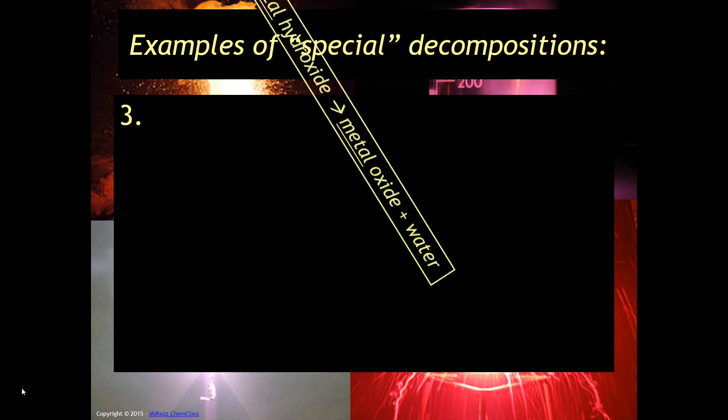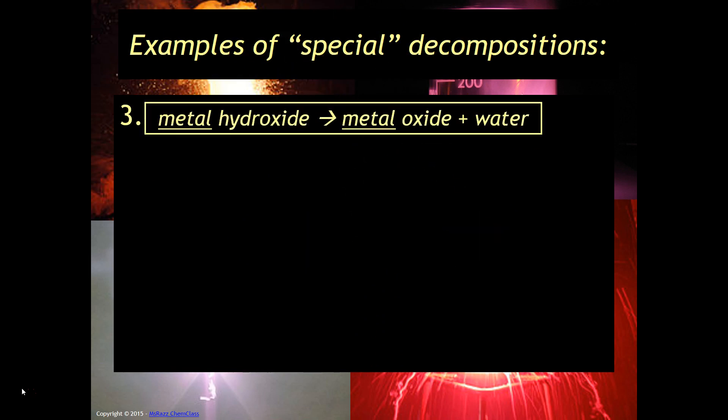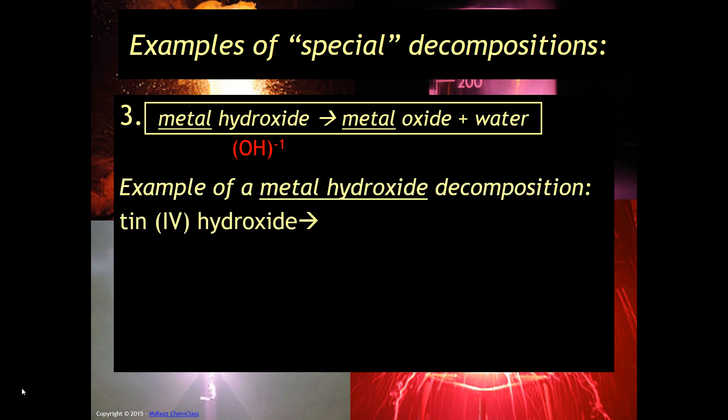The third type of special decomposition is a metal hydroxide. When that decomposes, it'll break down into a metal oxide and water. Hydroxide is OH with a minus one charge. So here's an example, tin four hydroxide. So tin four hydroxide, again, is going to break down into the metal oxide. So in this case, it'll be tin four oxide and water.